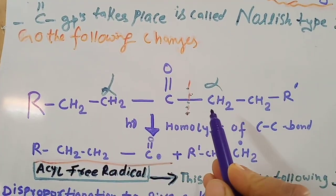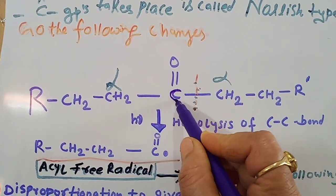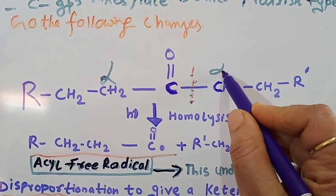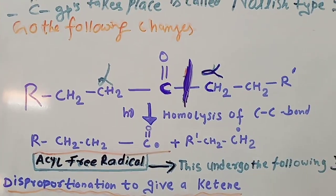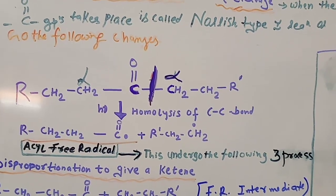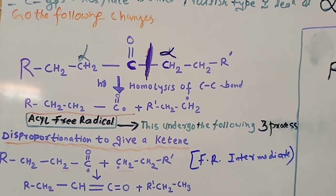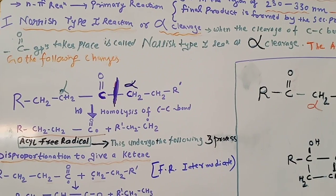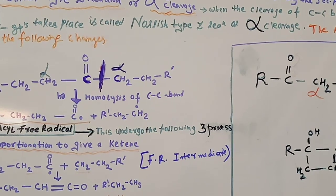For any carbonyl compound, the carbon next to the carbonyl carbon is the alpha carbon atom. If this bond gets cleaved, such cleavage is termed alpha cleavage, and in any carbonyl compound where alpha cleavage takes place, this phenomenon is known as the Norrish type 1 reaction. When the cleavage of the carbon-carbon bond alpha to the carbonyl group takes place, it is called Norrish type 1 reaction or alpha cleavage.